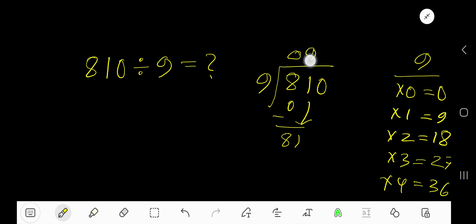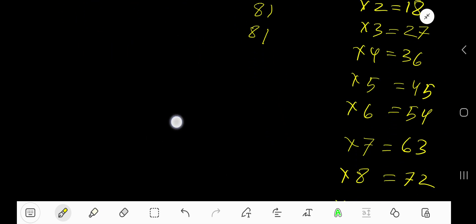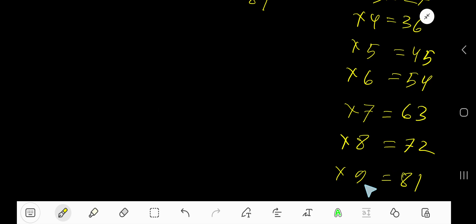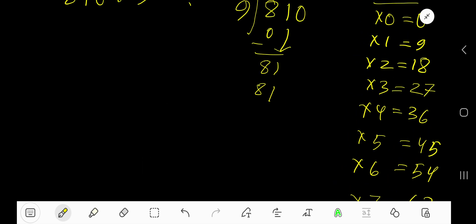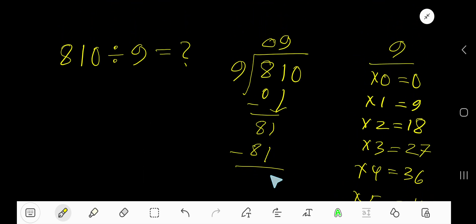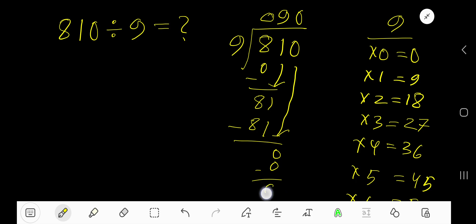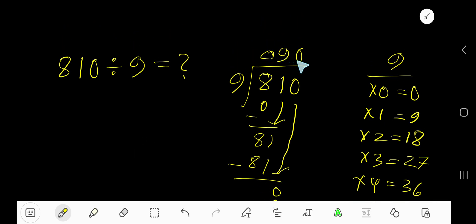9 times 9 is 81. Look, 9 times 9 is 81. Subtract, you are getting 0. Bring down the digit 0. 9 goes into 0 how many times? 0 times. 0 times 9 is 0. Subtract, you are getting 0 as your remainder. So 90 is our answer.